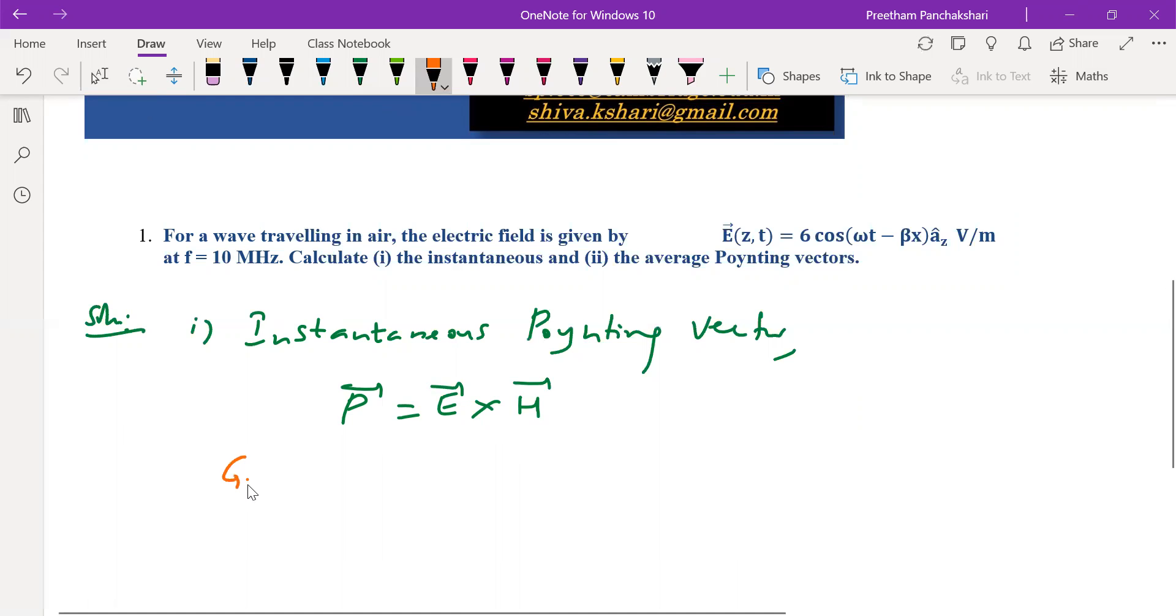We start with E. E is 6 cos(ωt - βx) â_z. This is E.